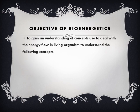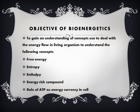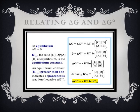The next slide covers the objectives of bioenergetics. There are following concepts to understand energy flow: free energy, entropy, enthalpy, energy-rich compounds, and the role of ATP. The following slide explains the relationship between ΔG and ΔG°. Both were discussed earlier — ΔG is Gibbs free energy and ΔG° is standard free energy change.